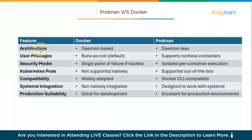Now the key differences. Architecture: Docker is daemon-based; Podman is daemon-less. User privileges: Docker runs as root by default; Podman supports rootless containers. Security model: Docker is a single point of failure if hacked; Podman provides completely isolated per-container execution. Kubernetes pod support: not supported natively in Docker; supported out of the box in Podman. Compatibility: Docker is widely adopted; Podman is Docker CLI compatible, so shifting is not a big deal. Systemd integration: Docker is not natively integrated; Podman is designed to work with systemd. Production suitability: Docker is great for development; Podman is excellent for production environments.